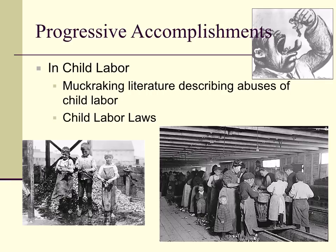In child labor, the progressives were aided by muckraking literature — writing that exposed the awful economic and working conditions as they really were. Jacob Riis and Upton Sinclair were muckrakers; that passage from The Jungle I read earlier is a perfect example. Child labor laws were then established, setting minimum ages for work and maximum hours, and requiring children to attend school.